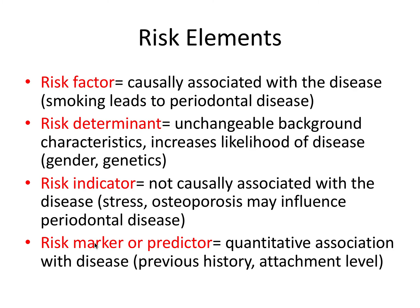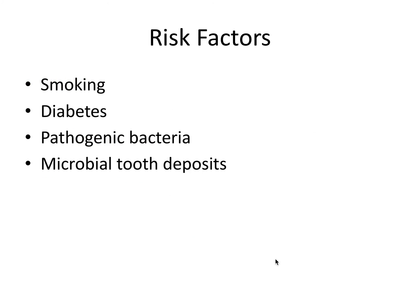A risk marker or risk predictor has some quantitative association with disease, such as a previous history of periodontal disease or having clinical attachment loss. For risk factors specifically, examples include smoking, diabetes, pathogenic bacteria, and microbial tooth deposits — the latter two being associated with plaque, which is the initiating factor and direct cause of periodontal disease.